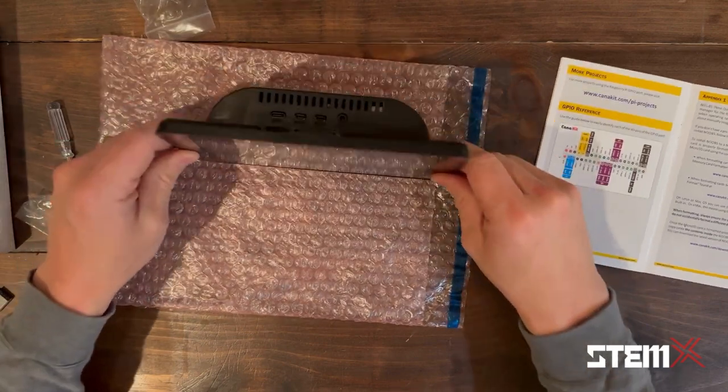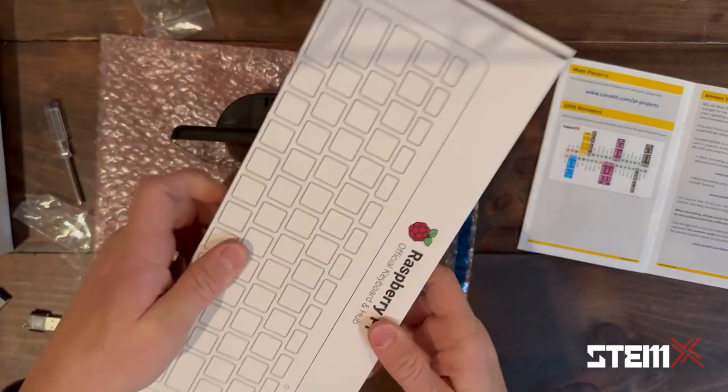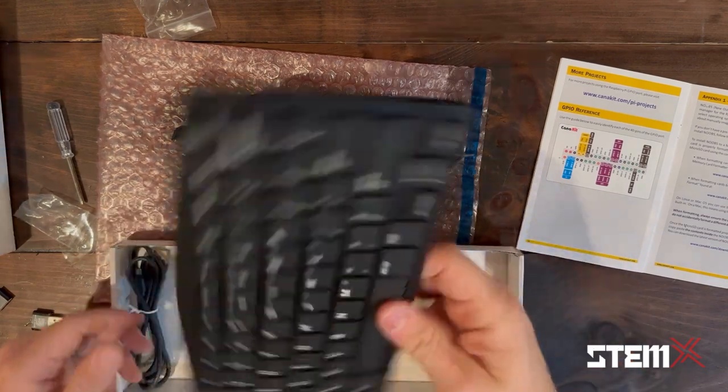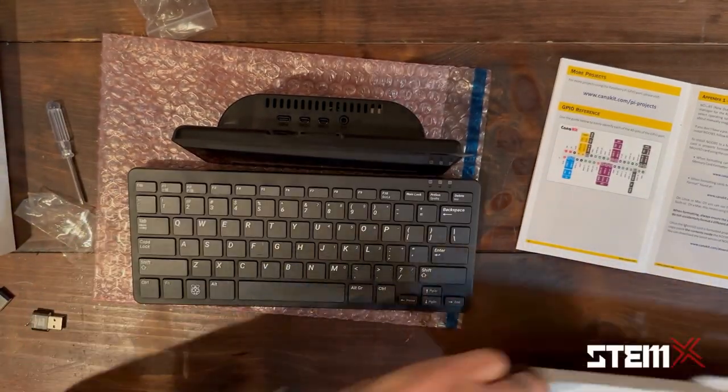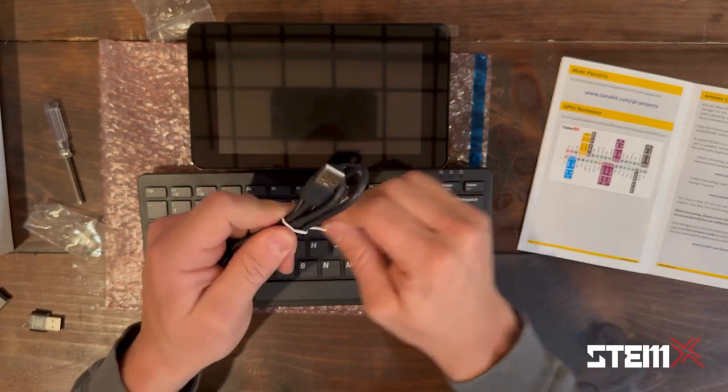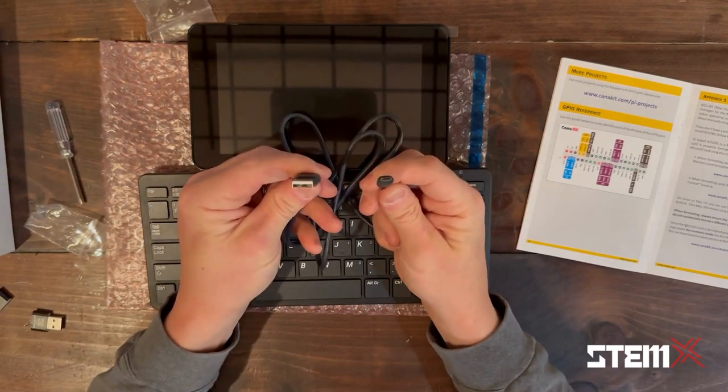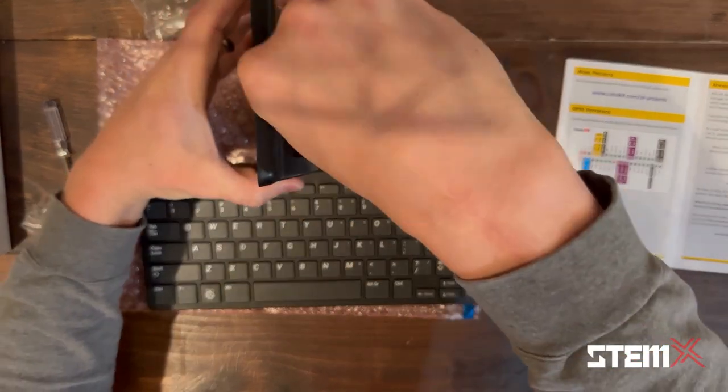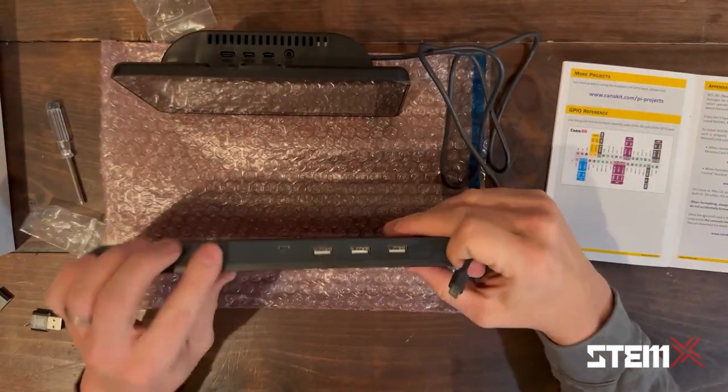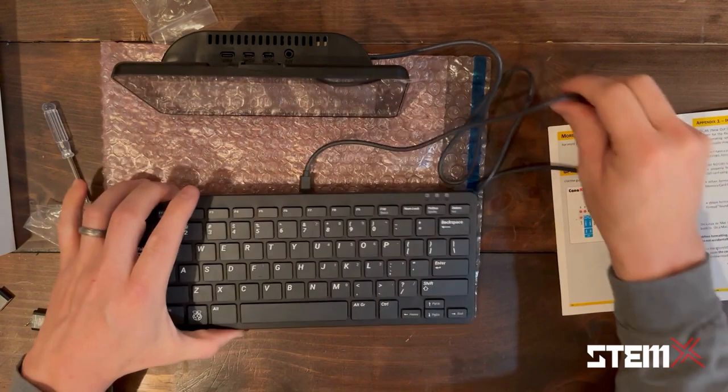Next, we're going to connect the keyboard. Your official Raspberry Pi keyboard. Open this up. You have a keyboard and USB cable. Very simple. Untie the USB cable. Micro USB on one side, USB-A on the other. USB-A goes into one of your USB ports on the back. Micro USB goes into the micro USB port on the keyboard. Now your keyboard is installed.